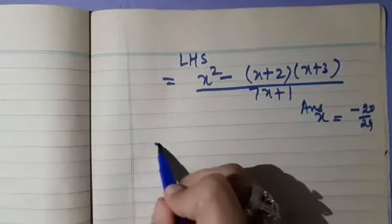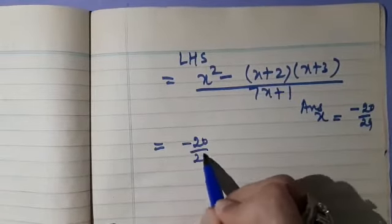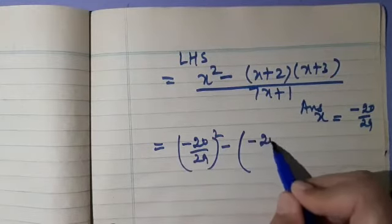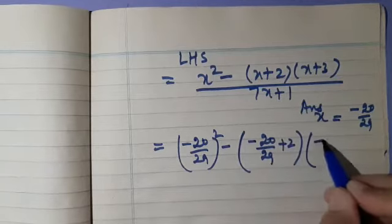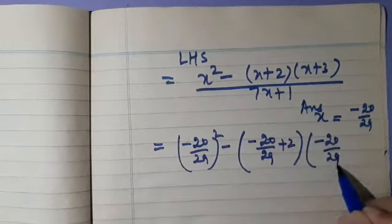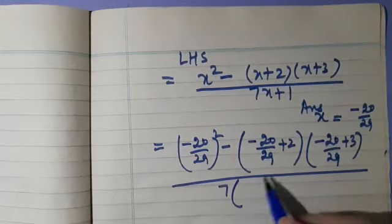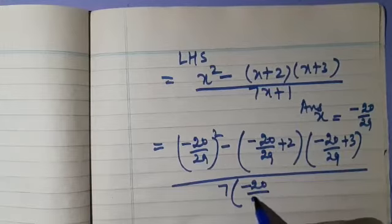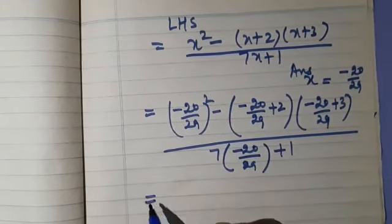Substituting, this is equal to: (minus 20 upon 29) whole square, minus (minus 20 upon 29 plus 2), into (minus 20 upon 29 plus 3), divided by 7 into minus 20 upon 29 plus 1. At the place of x we are writing minus 20 upon 29. Now we will simplify this.